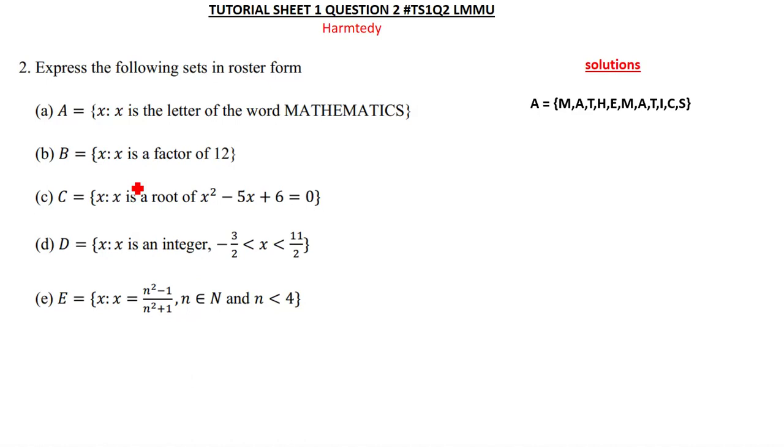When you talk about factors, you need to understand what a factor is. A factor is simply just a number that can go into another number without leaving any remainder. So when we say 2 is a factor of 12, meaning 2 can go into 12 without leaving a remainder. Let's quickly look at the solution.